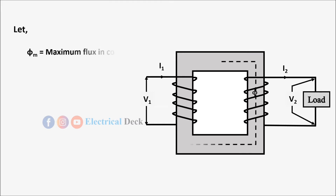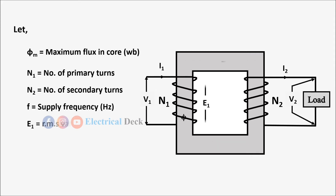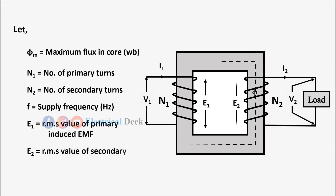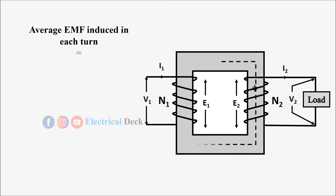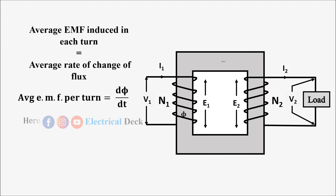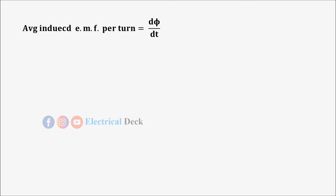Let φm be the maximum flux in the core, N1 be the number of primary turns, N2 be the number of secondary turns, f be the frequency of the supply, E1 be the RMS value of primary induced EMF, and E2 be the RMS value of secondary induced EMF. From Faraday's law of electromagnetic induction, the average EMF induced in each turn is equal to the average rate of change of flux, that is dφ/dt, where dφ is the change in flux and dt is the time required for that change.